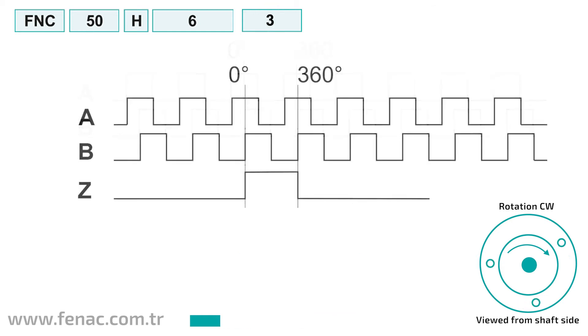The product with three outputs, A, B, and Z, has an index pulse. The Z pulse is produced once per round and is used to determine the reference point.